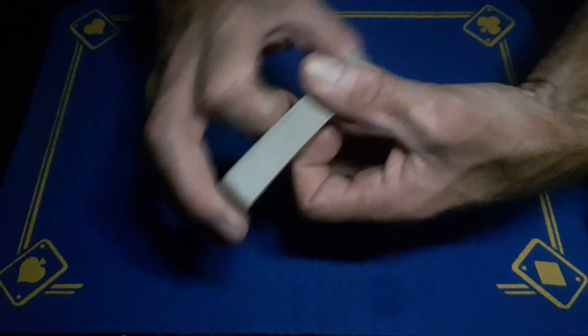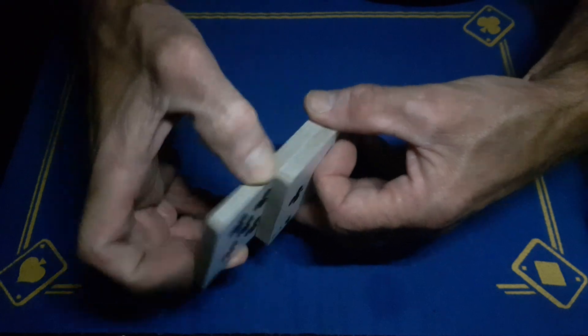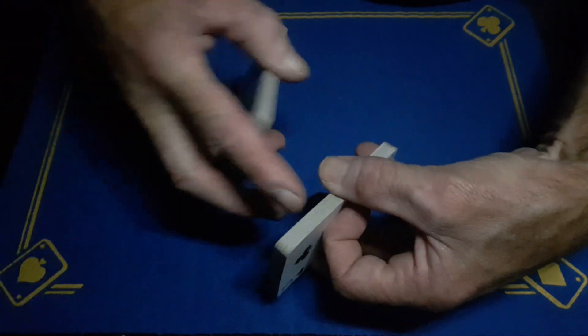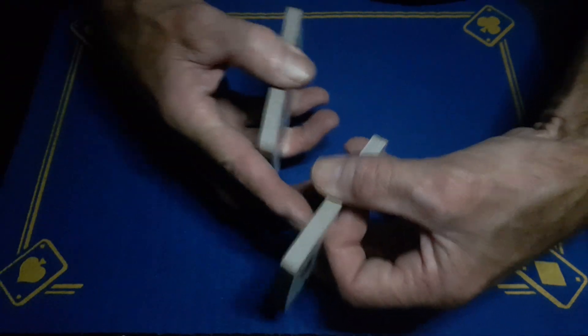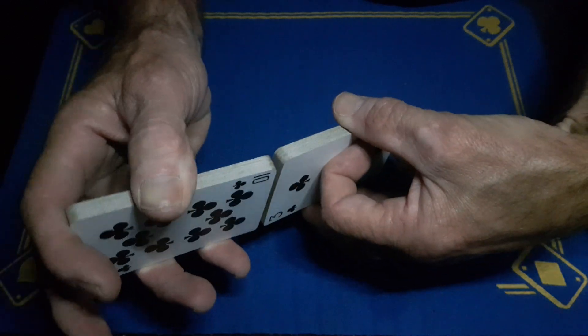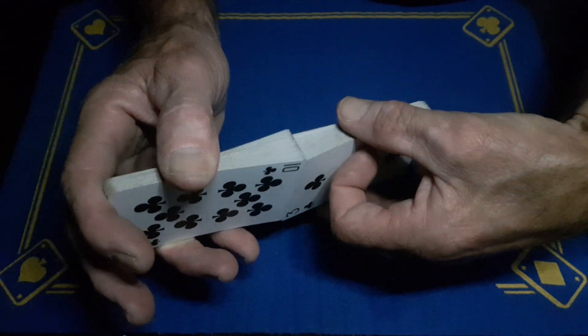So you need a decent packet of cards. These two packets need to be square and this block is compressed so it's all staying together. Likewise this one, and they will just go together.